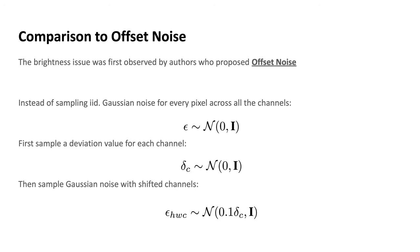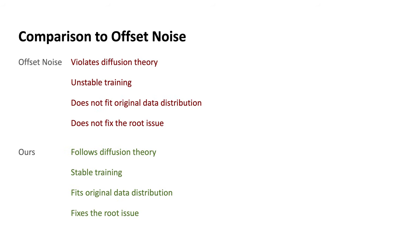We want to give credit to the authors who first discovered the brightness issues in diffusion models and proposed something called offset noise to alleviate the issue. Instead of sampling i.i.d. Gaussian noise for every pixel across all channels, they first sample a deviation value for each channel and then shift the channels accordingly when sampling pixel noise. This forces diffusion models to not rely on input brightness information. However, offset noise is a fundamentally hacky solution that violates diffusion theory and leads to unstable training — in fact, you can only fine-tune for a few iterations before it crashes. It also does not guarantee that the model fits the original data distribution. Our approach fundamentally follows diffusion theory, leads to stable training, and guarantees fitting to the original training data distribution.